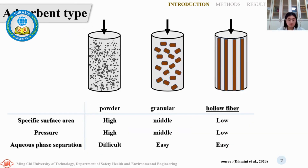However, powder adsorbents are difficult to separate from water after dye adsorption, and granule sorbents cause greater pressure loss compared to powder or fiber membranes. Therefore, in this experiment, biochar powder will be processed into a hollow fiber membrane form for application in dye adsorption.